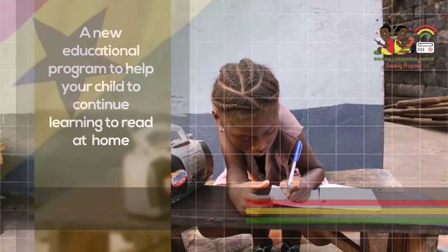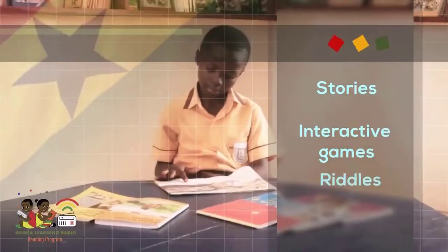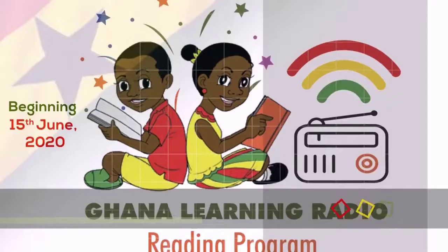Let us note that components of a set are called members or elements of the set. Also, members of a set are enclosed in a curly bracket. Now list the factors of 36 in a set form. Factors of 36 are 1, 2, 3, 4, 9,